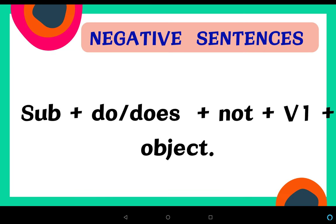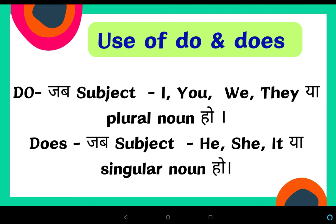After this, we move to negative sentences. In a negative sentence: Subject + do/does + not + V1 + Object. Here only the first form of the verb comes. No S/ES is added to the verb because where S/ES would come, we use 'does' instead.